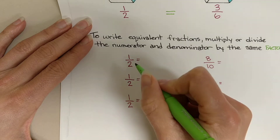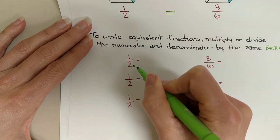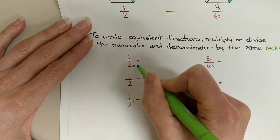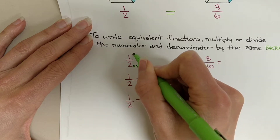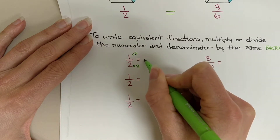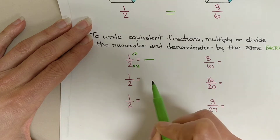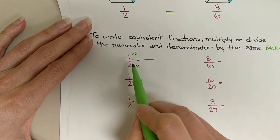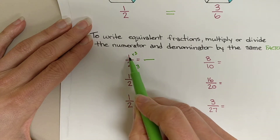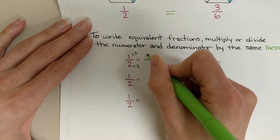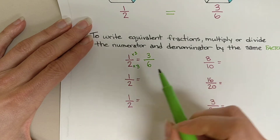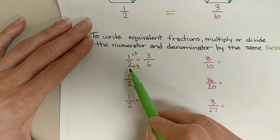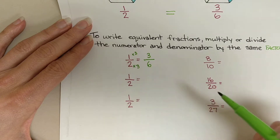For the first one, I'm going to multiply by a factor of three. So I will create an equivalent fraction. One times three gives me three, and two times three gives me six — so three sixths. We can say that one half is equivalent to three sixths.